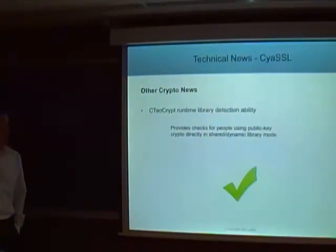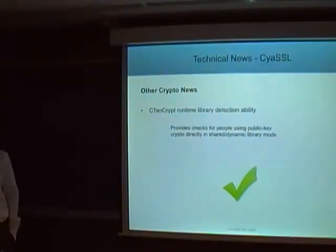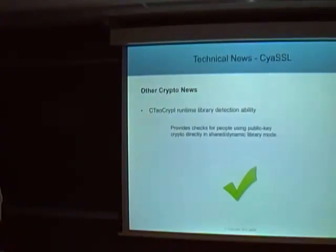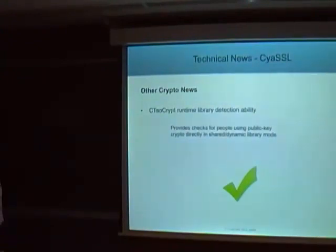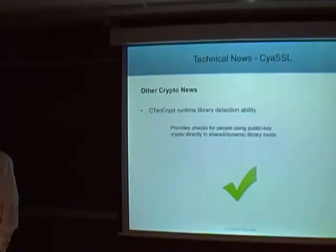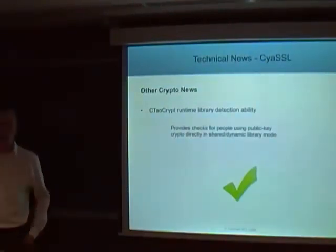We've added a CTAC check for runtime library detection. This is a check to make sure that you're using the same public key options that you built the library with as when you're running the library at runtime. For example, say you build an application with normal math, and then you run it with the CYASL shared library that is using fast math — this will provide a check to let you acknowledge that inconsistency.